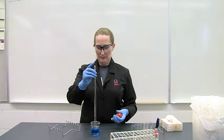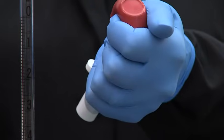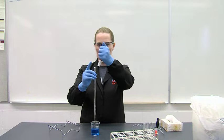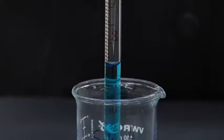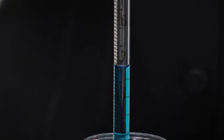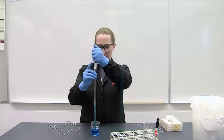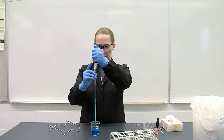Expel air from the pipette bulb and place the bulb firmly on the top of the pipette stem. Slowly release pressure on the bulb to draw liquid up the pipette past the calibration mark by about 1 cm. Maintain steady pressure to prevent fluid from contaminating the bulb.